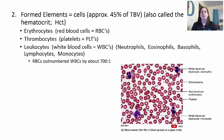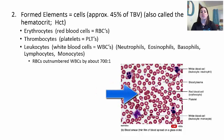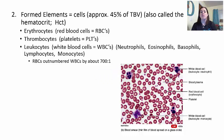The formed elements are the cells, making up approximately 45% of total blood volume. This is also known as the hematocrit, abbreviated as HCT. Erythrocytes is another name for red blood cells—erythro means red, cyte means cell—abbreviated as RBC. Thrombocytes are platelets, abbreviated as PLT. Leukocytes are white blood cells, abbreviated as WBC, and include neutrophils, eosinophils, basophils, lymphocytes, and monocytes.